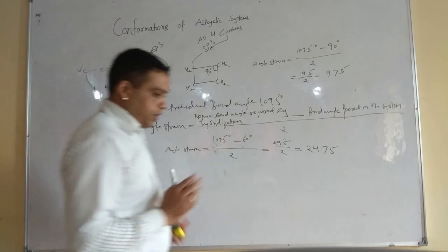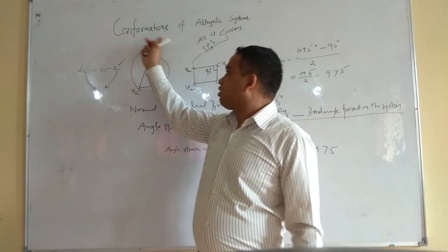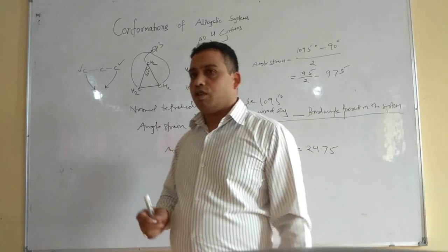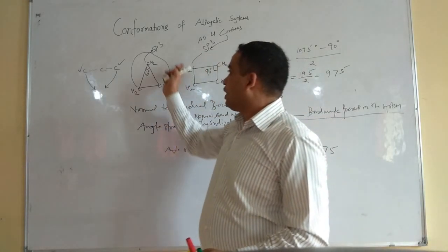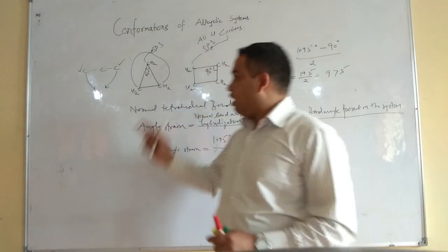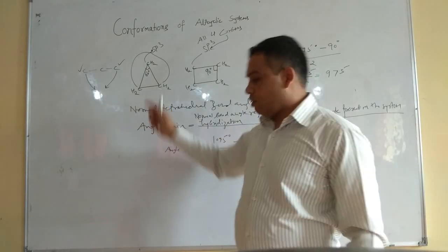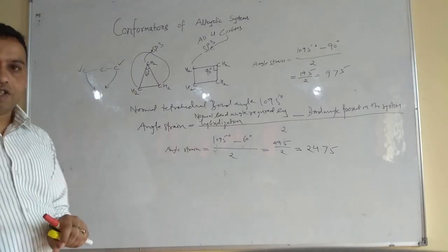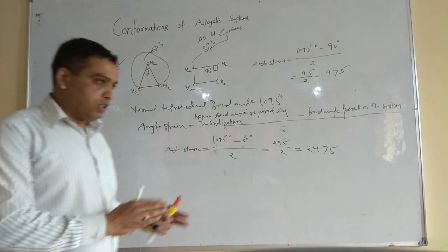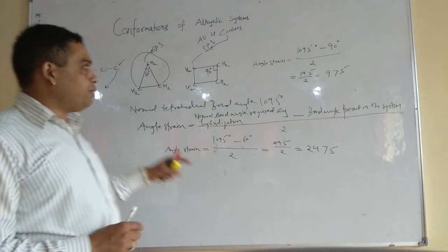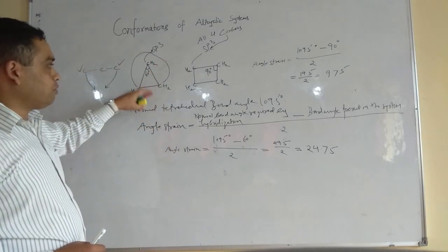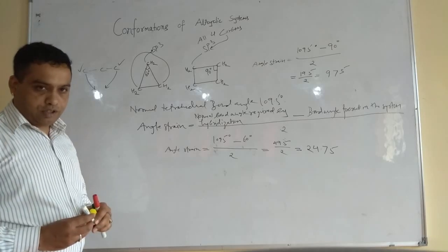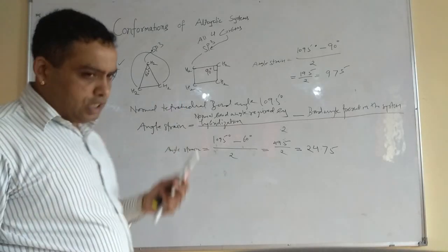Remember, cyclopropane has three points and has no choice except to adopt this particular planar structure, because there is no way to arrange three points in space other than in a plane. So cyclopropane cannot do anything to overcome this angle strain — it remains as a flat structure. This is why Baeyer was correct in saying these structures are planar, but this planar nature does not apply to the cyclobutane system.